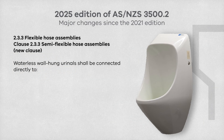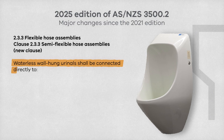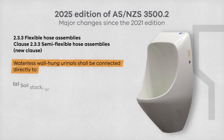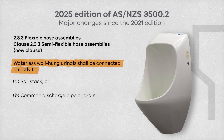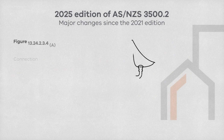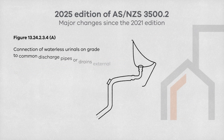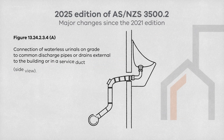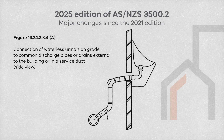In this new clause, it states that waterless wall hung urinals must be connected directly to a soil stack, common discharge pipe, or drain. A new figure has been introduced illustrating the connection of waterless urinals installed on grade to drains located outside the building or within a service duct, shown from the side view.